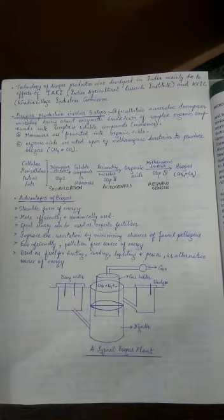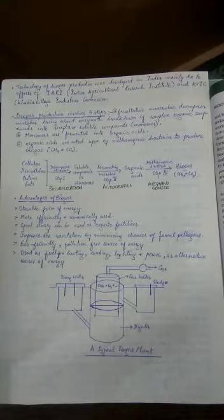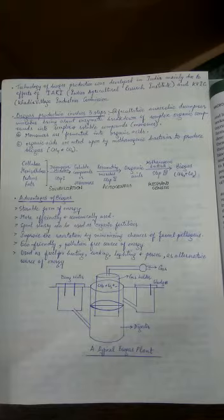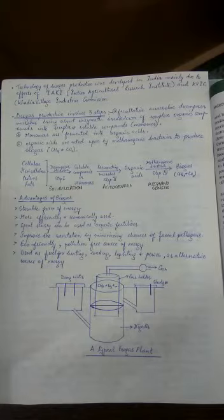The third step converts organic acids into methane gas. Methanogenesis is the last step during which methanogenic bacteria—I gave you the name from NCERT and others—finally cause the formation of methane gas.